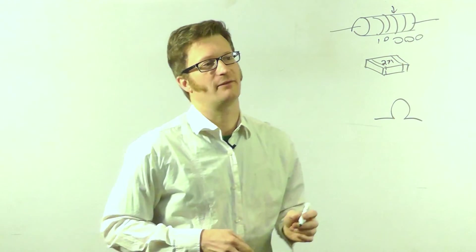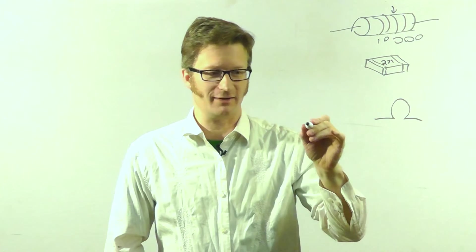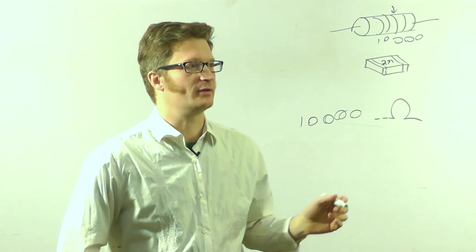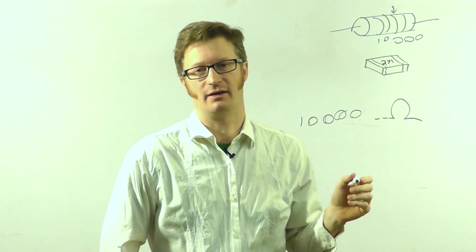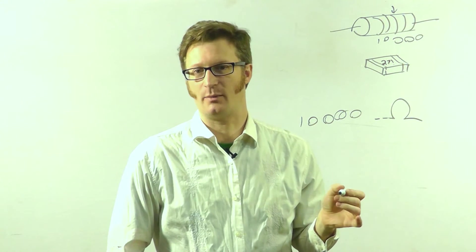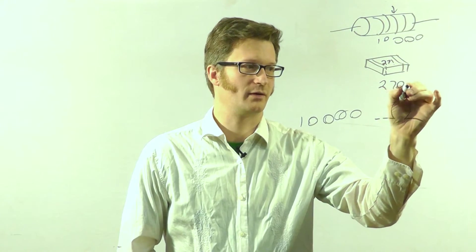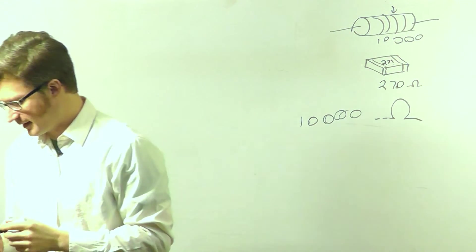So if I have a resistor like this, they can't always write 10,000 or whatever. So what they do is the first two values, just like this, are the main numbers for it. And then this number tells you how many trailing zeroes there are. So this is a 270 ohm resistor, if it looks like that.